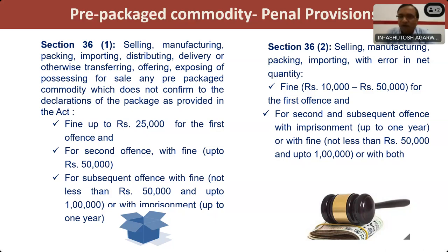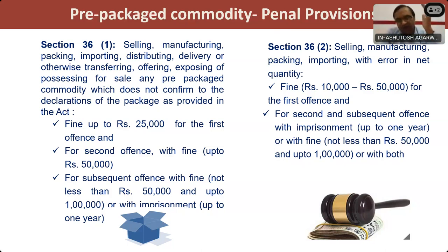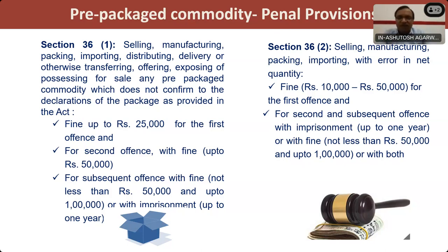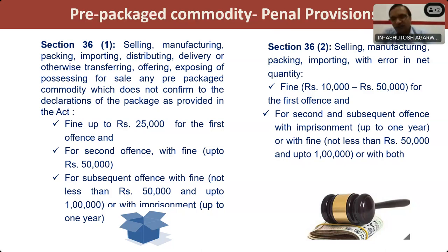The provision of imprisonment for one year is also made. But the point is: if an offense is done within three years, it will be called the second offense. That means if an offense is done today, on 10th February 2024, and after 10th February 2027 the same offense repeats, that will be treated as the first offense. An offense done within a duration of three years is called the second offense; otherwise, after three years, it is treated as the first offense.